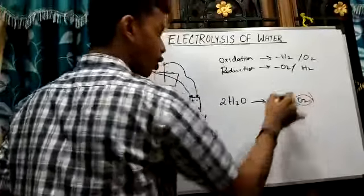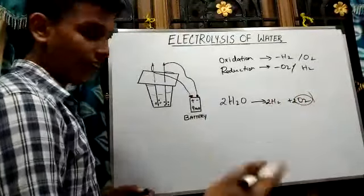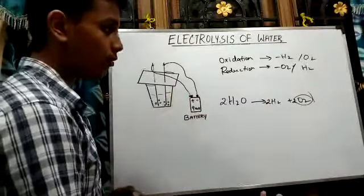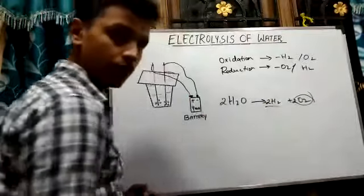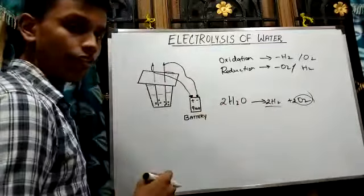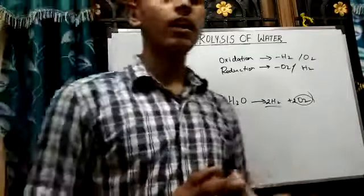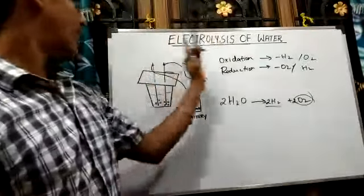Where this oxygen undergoes reduction and attaches itself to the cathode, while hydrogen undergoes oxidation and attaches itself to the anode. You will be seeing the practical demonstration of electrolysis of water.